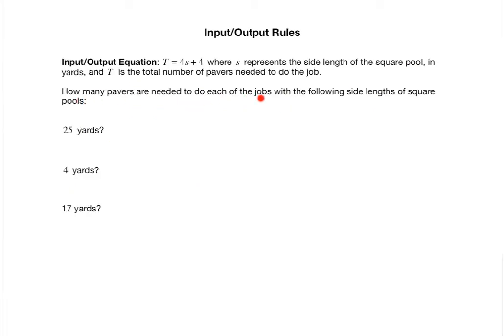How many pavers are needed to do each of the jobs with the following side lengths of square pools? So I don't need to add four to the previous size. I have this general rule. And these all are specific values of s: s is 25 yards, s is 4 yards, s is 17 yards. So once I have the input-output rule in symbolic form, I can simply take this s value and plug it into the rule for s here, and then do the computation to get the value of T.